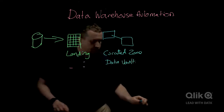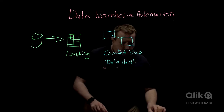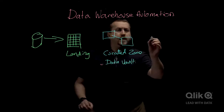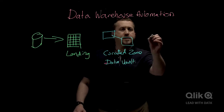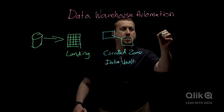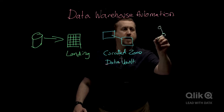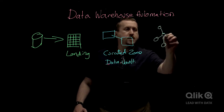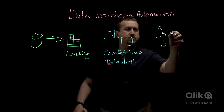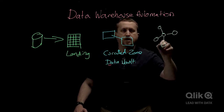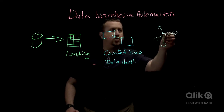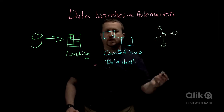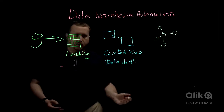And the third zone is our analytics or reporting zone. And that's typically structured as star schemas, where we have a central fact and emanating from the central fact, our dimensions. So it might be number of widgets sold, days, weeks, months, years — that sort of thing.